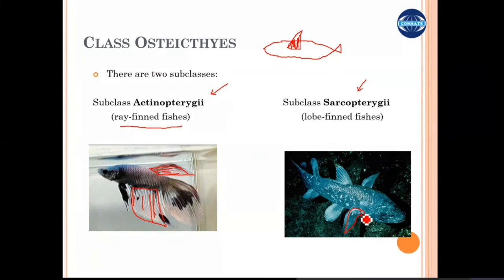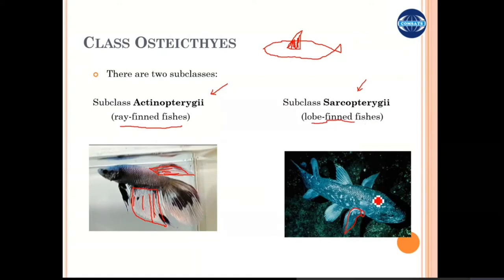In contrast, Sarcopterygii have appendage-like fins with joints, and these fins can be moved just like the limbs in higher mammals or amphibians — so they are lobed-finned fish. They have limb girdles in which shoulder joints and hip joints are present.